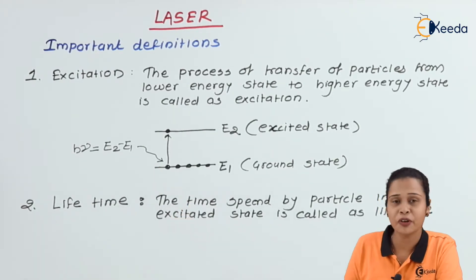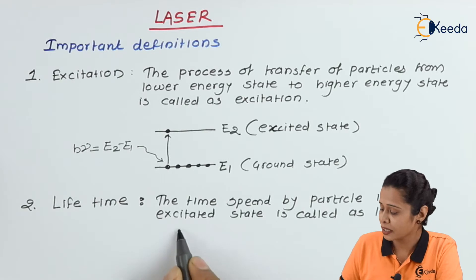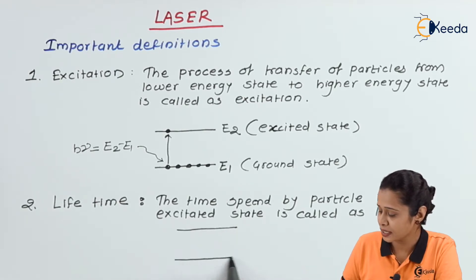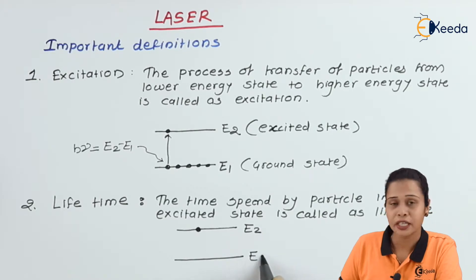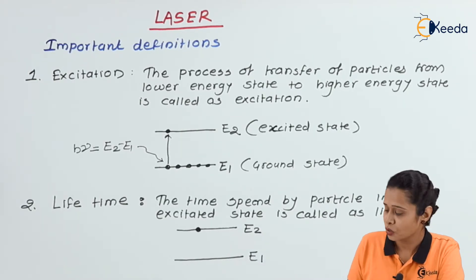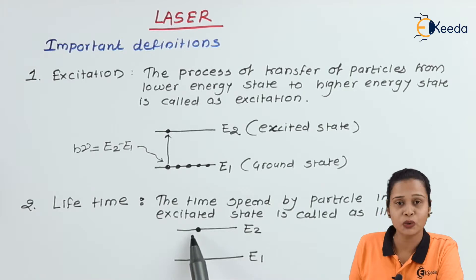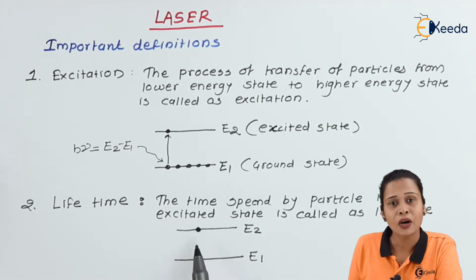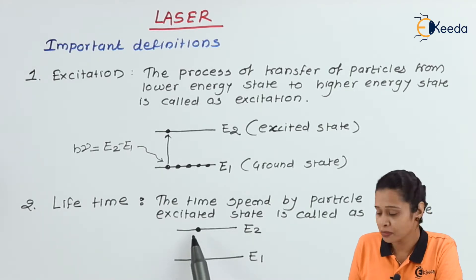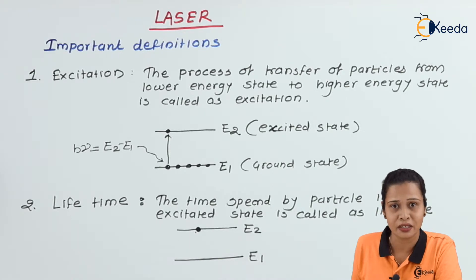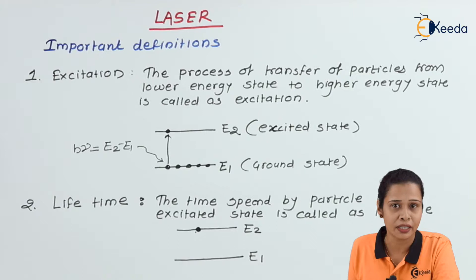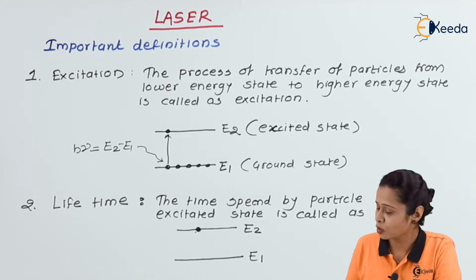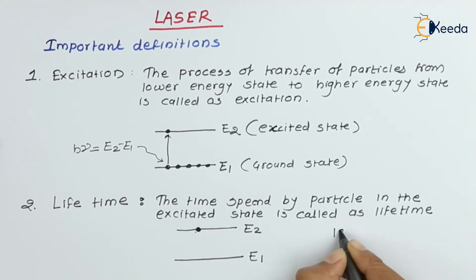Considering the particle is now in the excited state E2, with E1 as the ground state, the particle will absorb energy and jump into the excited state. The particle will spend some time in the excited state — that time is called the lifetime of the particle. Generally, the lifetime of the particle is 10 raised to minus 8 seconds.